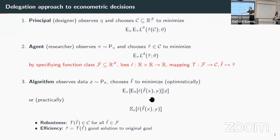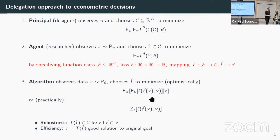We can formally show we have robustness in the sense that no matter what that algorithm does we're still unbiased, but we also have benefits from alignment: if that algorithm is good at solving the risk minimization problem, we get a better estimator with lower variance and lower loss. I argue more broadly that tools from mechanism design let us solve problems like that. One thing worth spelling out is verifiability—what the principal can check versus what they cannot—which is really at the heart of defining the problem.